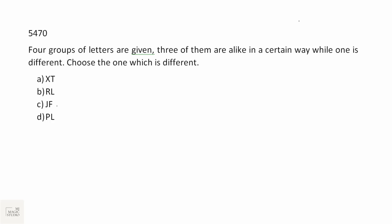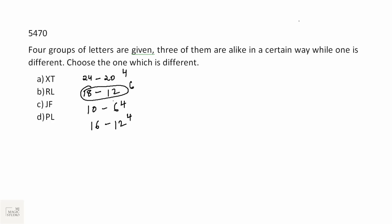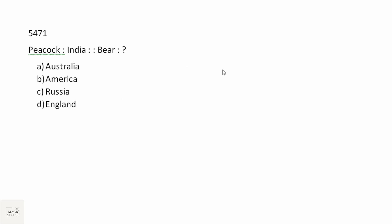Four groups of letters are given; three are alike — choose the odd one out. Whenever I see alphabets, I prefer to convert them to numbers: X=24, T=20, R=18, L=12, J=10, F=6, P=16. Here the difference is 4, here the difference is 4, here the difference is 4, but here the difference is 6. So RL is the odd one out.